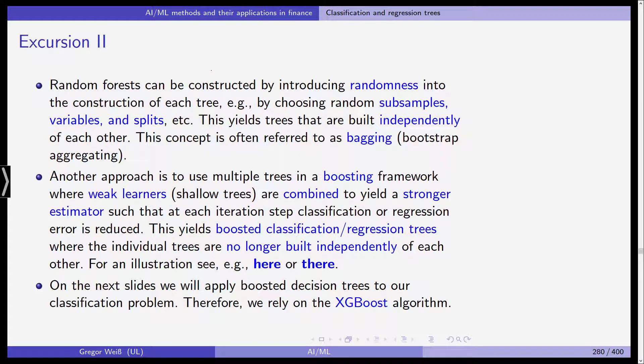So what are random forests? They can be constructed by introducing randomness into the construction of each tree. For example, if you choose random subsamples or variables and splits, this will yield trees to a smaller one. These are trees that are built independently of each other and this concept, this idea, is usually referred to as bagging and also bootstrap aggregating.